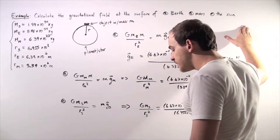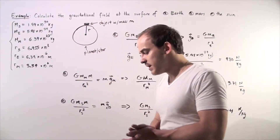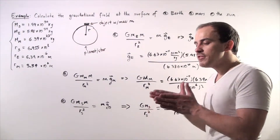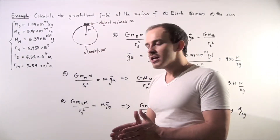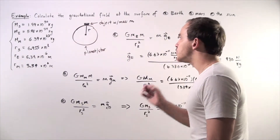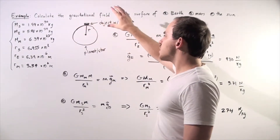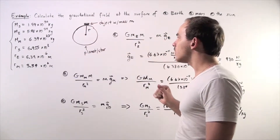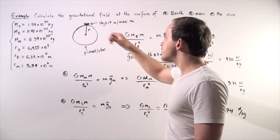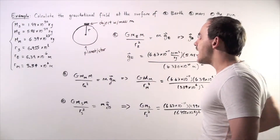We want to use this information to calculate the magnitude of our gravitational field. Recall that the gravitational field is the same thing as acceleration. So we're essentially trying to find the acceleration of an object with some mass m close to the surface of our planet or star, which has radius r.